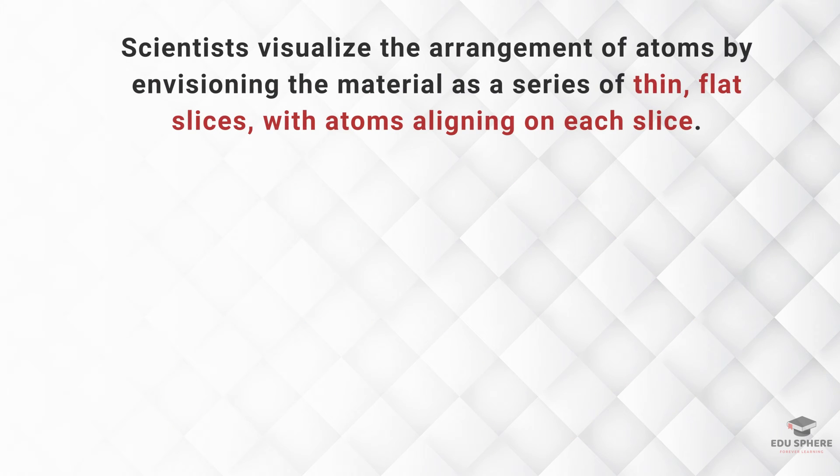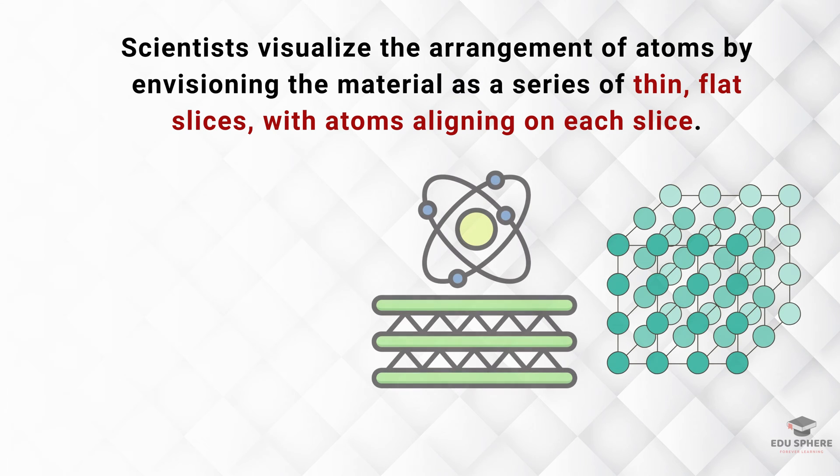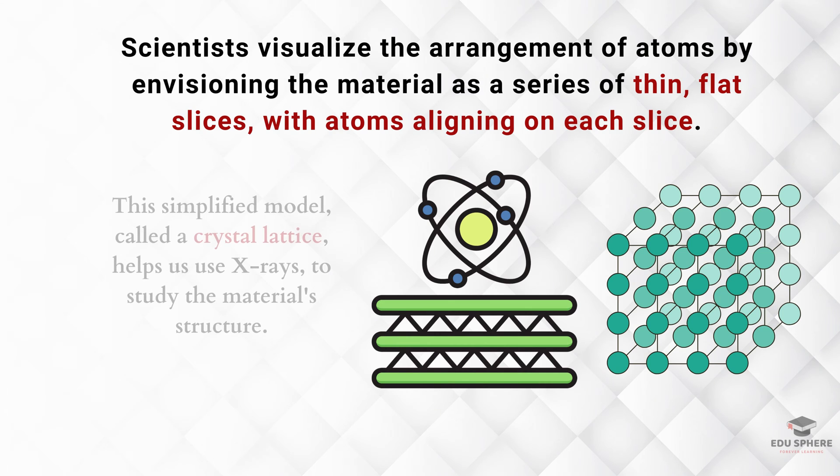To understand how these atoms are positioned, scientists imagine the material as a stack of thin and flat slices, with atoms lining up on each slice. These slices are all spaced evenly apart. This simplified model, called a crystal lattice, helps us use X-rays to study the material structure.